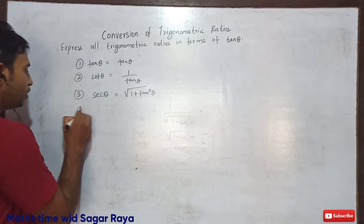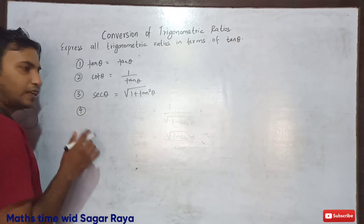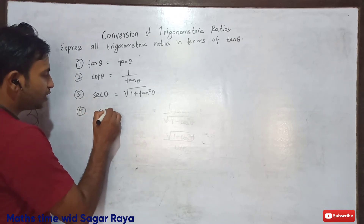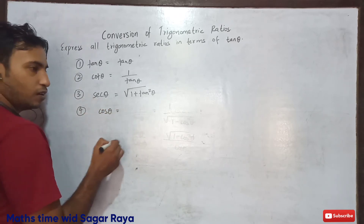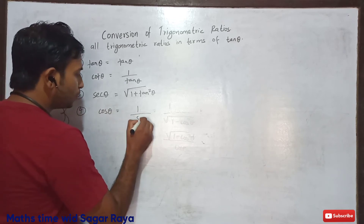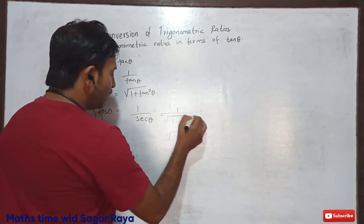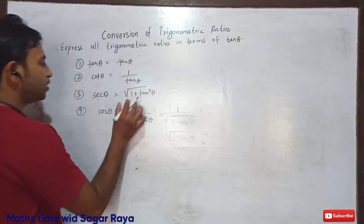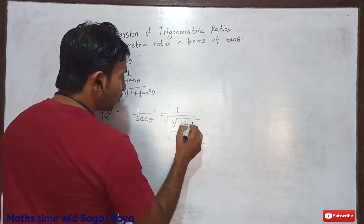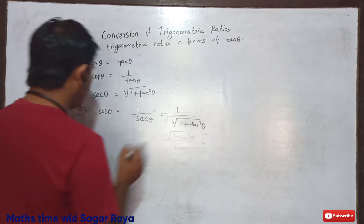Similarly, if we know sec theta, we can find the inverse of sec theta. The inverse of sec theta is cos theta. So cos theta is equal to 1 by sec theta, and instead of sec theta we may write root under 1 plus tan squared theta. So cos theta equals 1 divided by root under 1 plus tan squared theta.